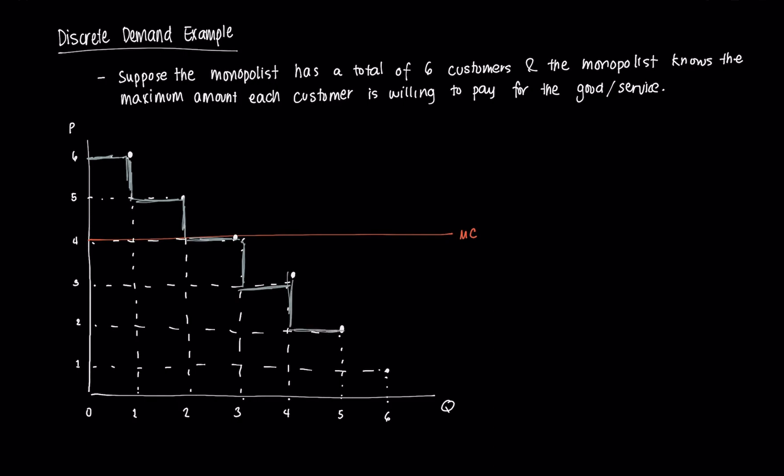This is our demand curve for this case, and it looks like a staircase because this is a discrete case. In this discrete case, the demand curve is effectively also your marginal revenue curve. Now, how would the monopolist price its product to maximize profits?